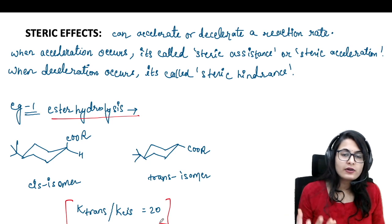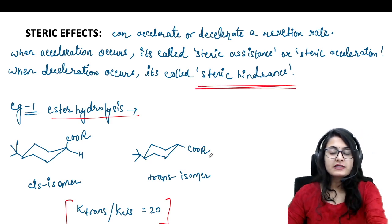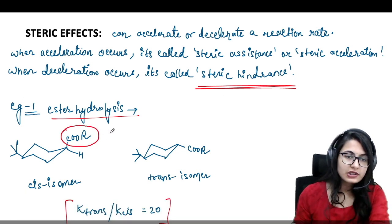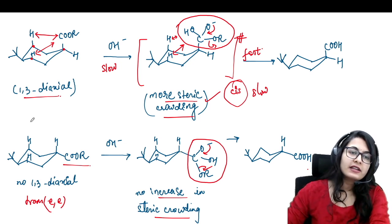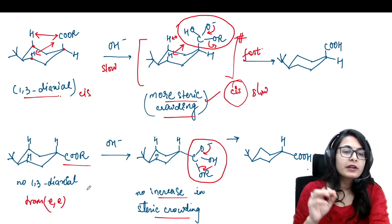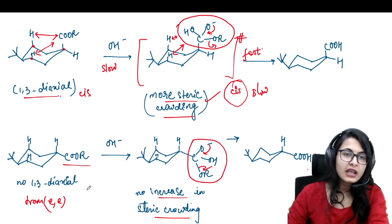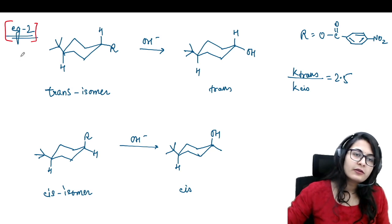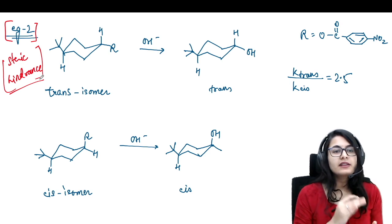The trans isomer is giving you hydrolysis 20 times faster than the cis isomer. This is a case of steric hindrance — when being on the axial position causes the reaction to slow down. Similarly, ester hydrolysis and ester formation, if you are having cis and trans isomers like these, they are going to give you the same ratio because the mechanism in both involves the tetrahedral intermediate. Now there is one more factor to consider — example number two of steric hindrance. When the bulk in the transition state is causing the reaction to slow down, that is when you have steric hindrance.